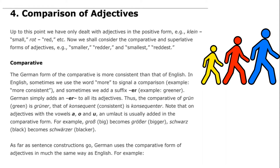The form of the comparative in German is luckily more consistent than that of English. In English, sometimes we use the word "more" to signal a comparison (e.g., "it's more consistent than something else"), and sometimes we add the suffix "-er" (e.g., "greener" not "more green"). A linguistics professor once noted the rule of thumb: if a word is two syllables or fewer, you add "-er" (like "green" → "greener," "tall" → "taller"), but if it's longer, like "beautiful" (three syllables), you say "more beautiful."